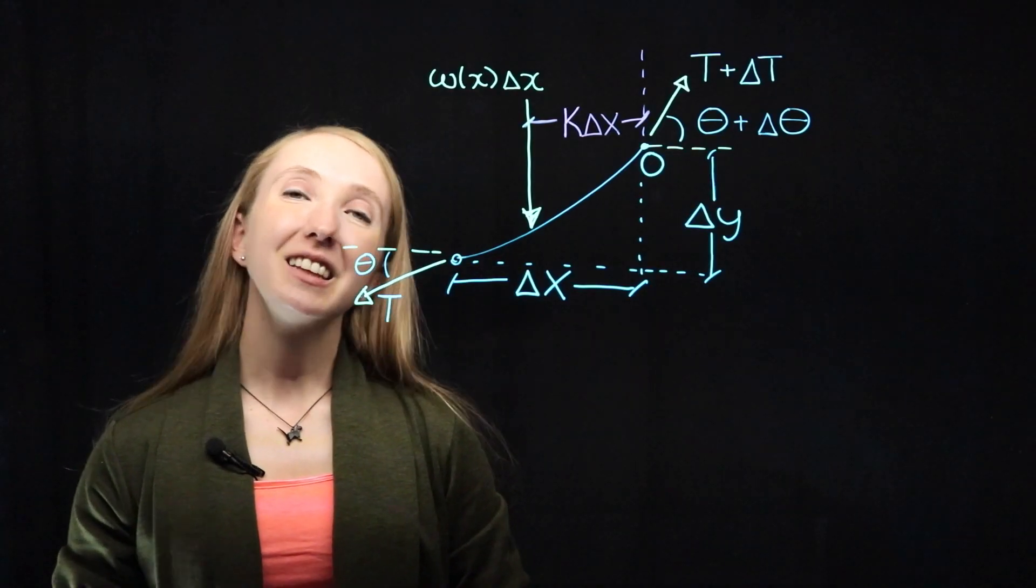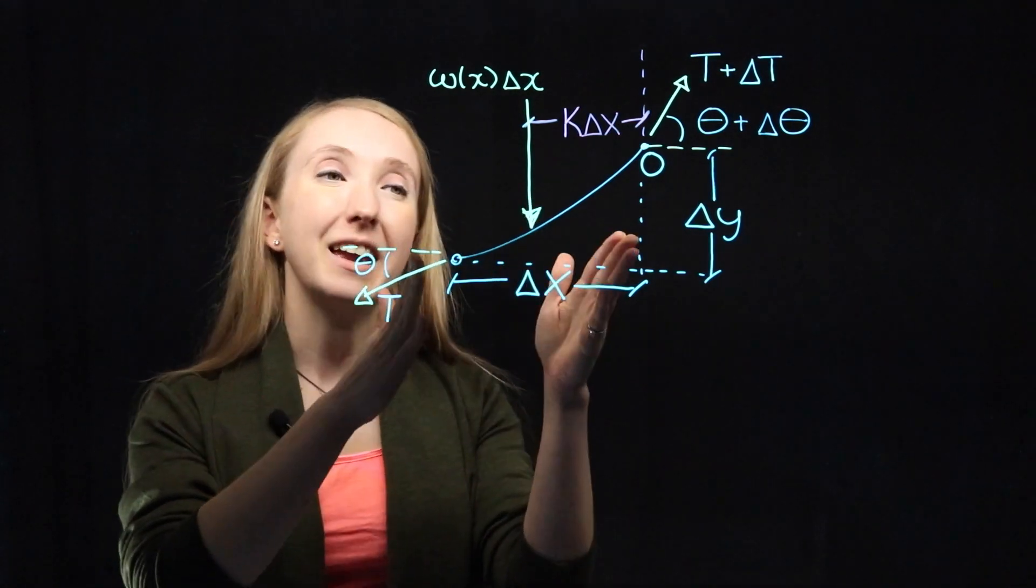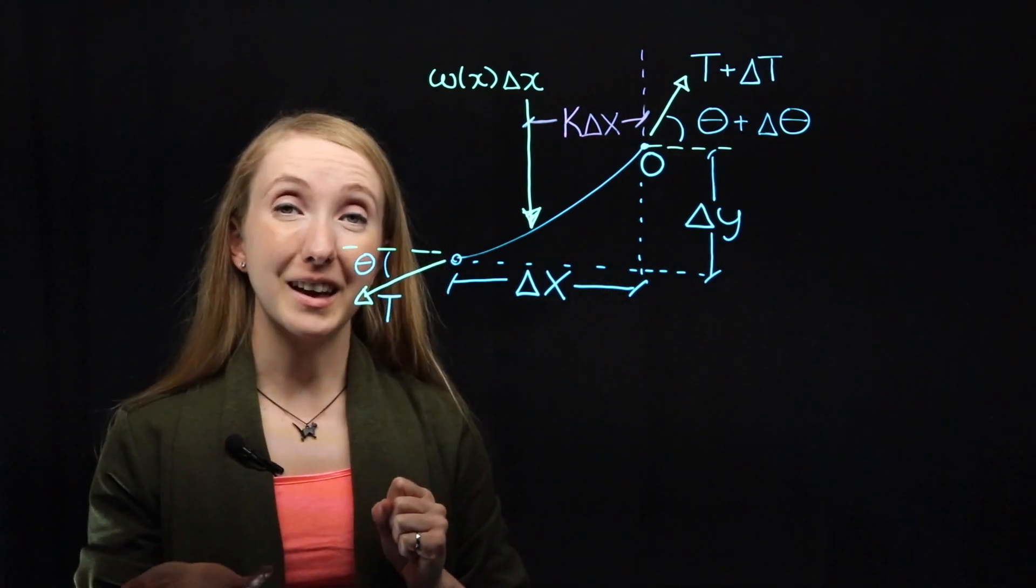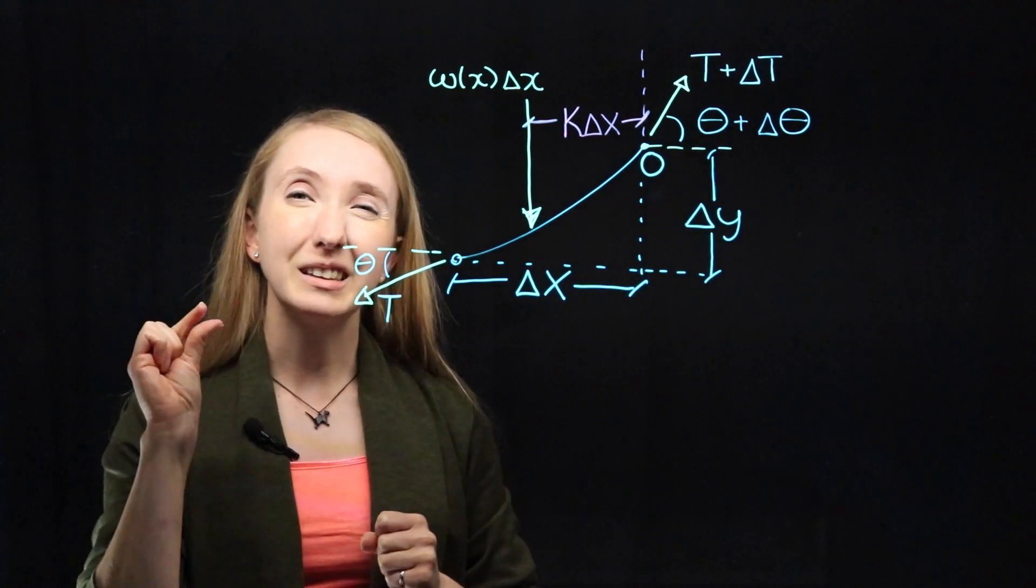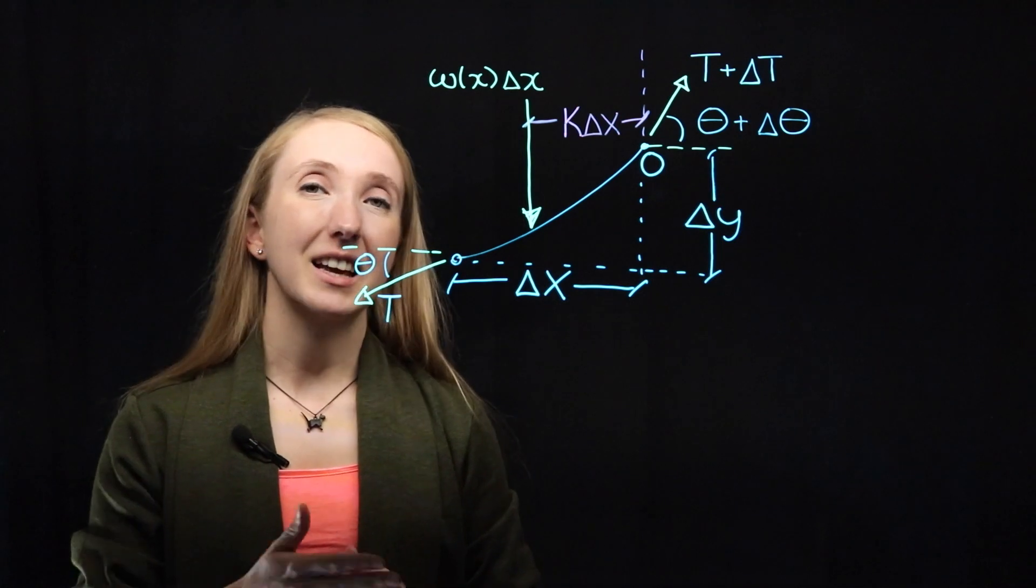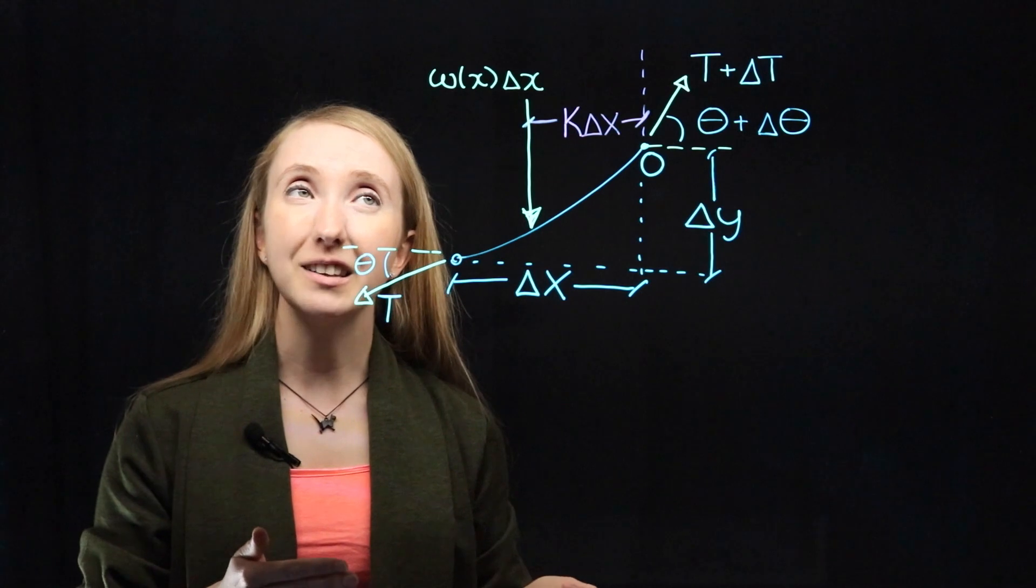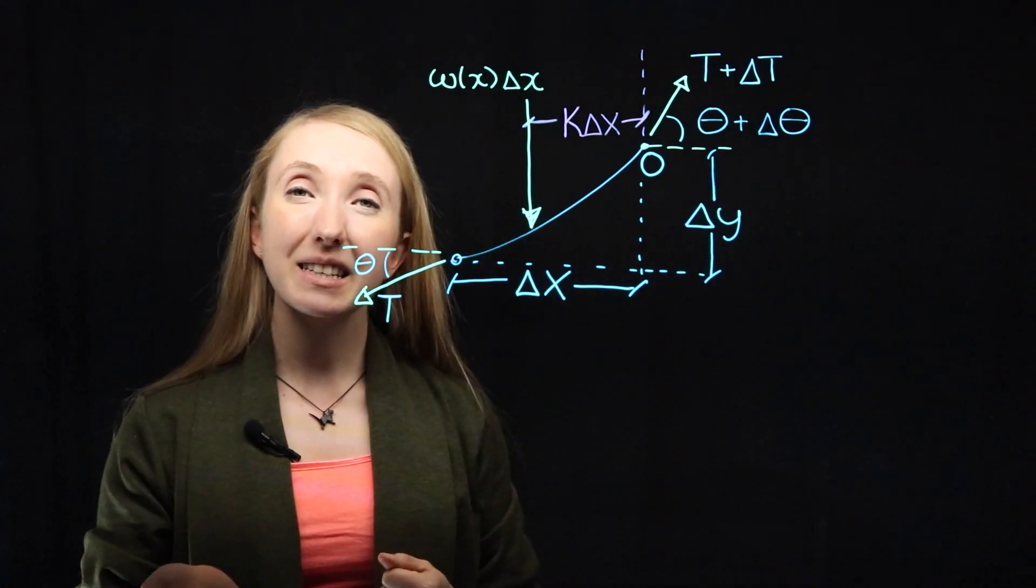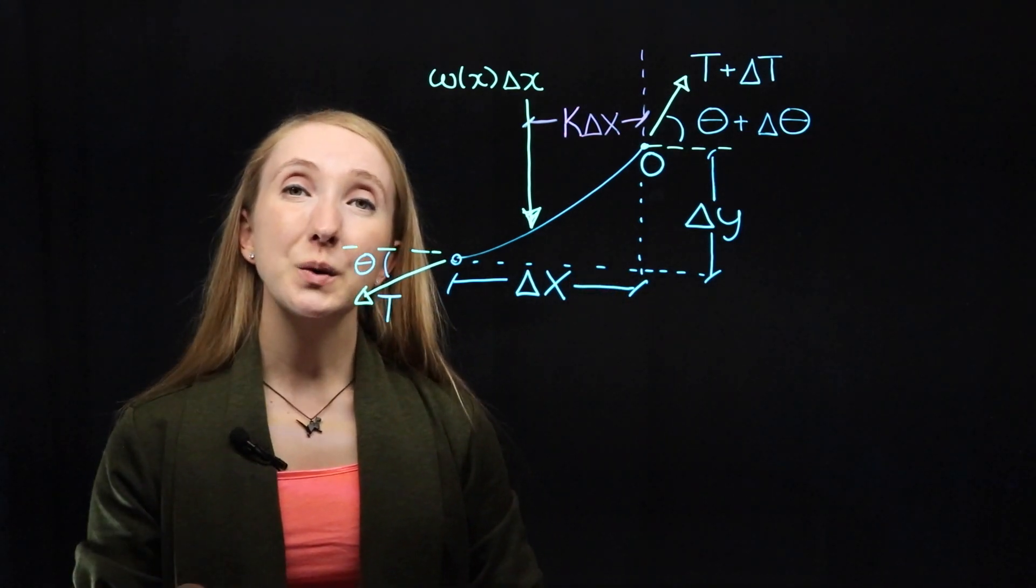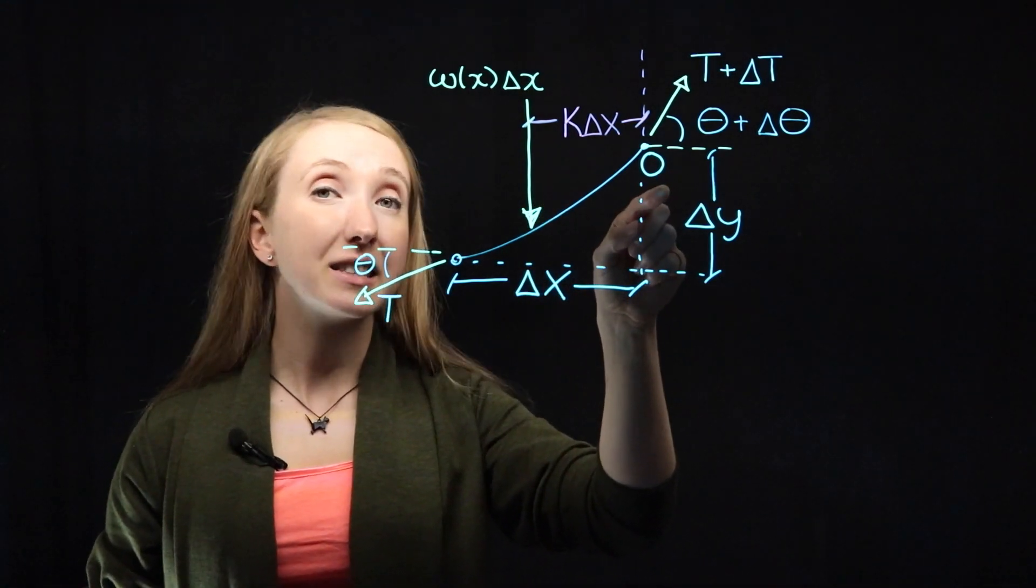When we look at the equilibrium of a cable with a constantly changing slope, we have to zoom way in and consider the equilibrium of just a tiny little segment of that cable. This segment spans a little distance of delta X. And the total load that's acting on that segment is equal to the value of our loading function at that point, WX, times the distance of that section span, delta X.